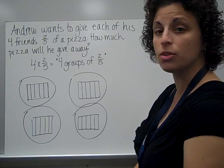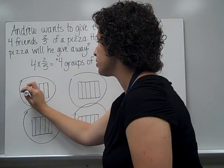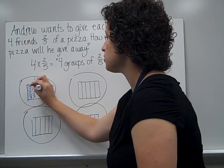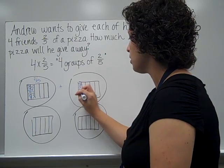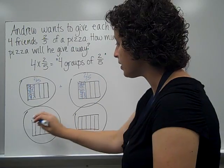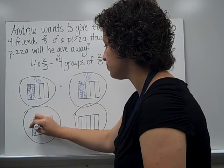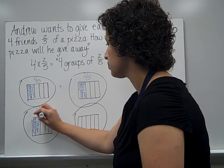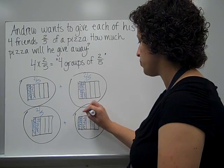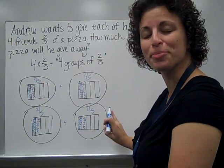How much were they getting? 2 fifths each. So I'm going to go back and color in 2 fifths in each group: 2 fifths for this friend, plus 2 fifths for this friend, plus 2 fifths for this friend, plus 2 fifths for this friend. So I have 2 fifths plus 2 fifths plus 2 fifths plus 2 fifths.